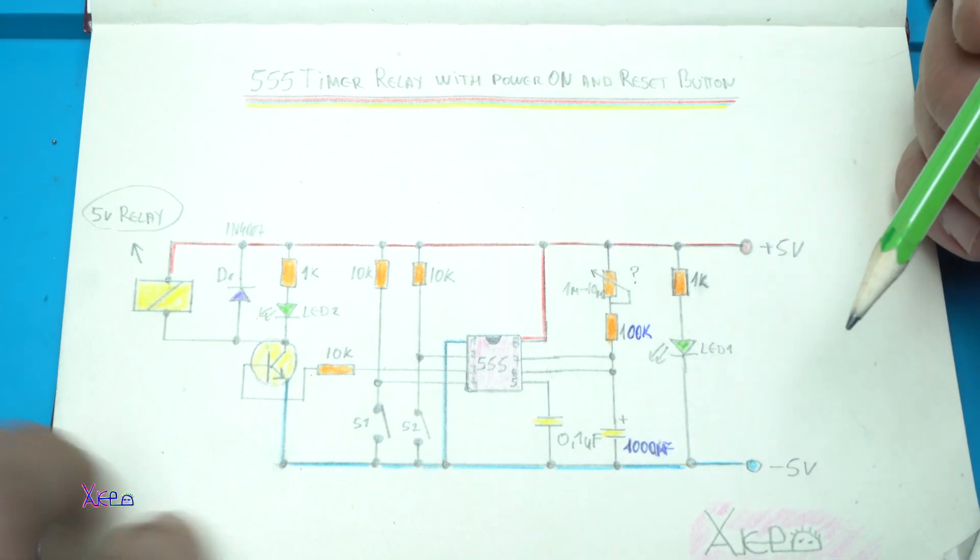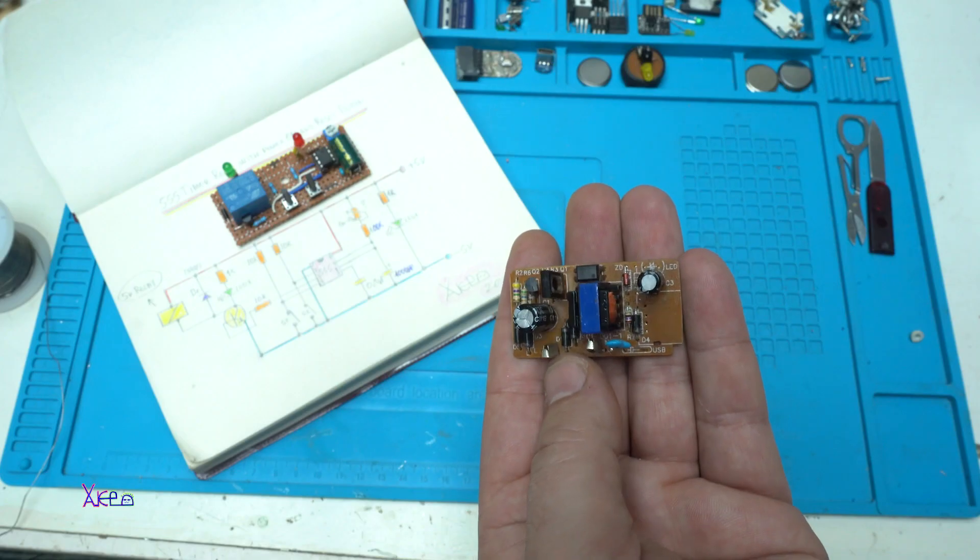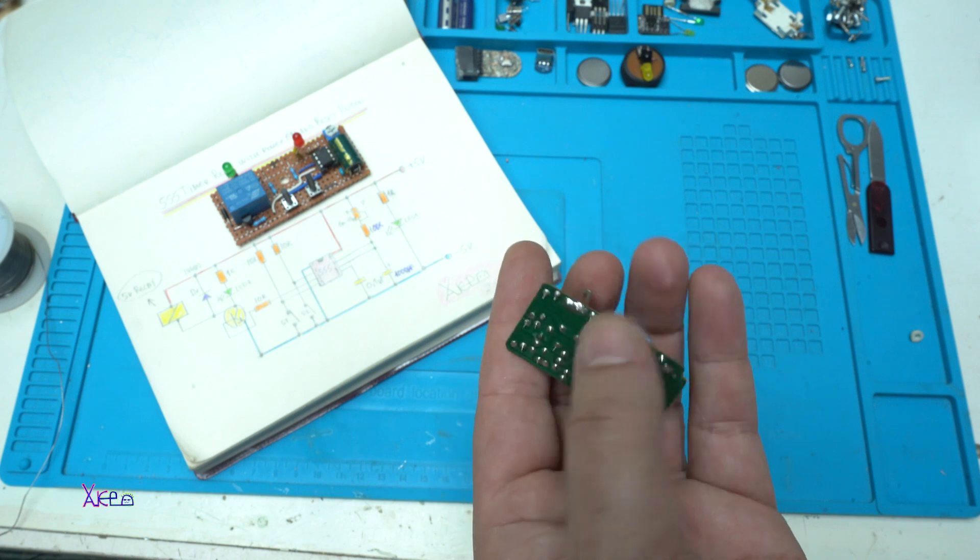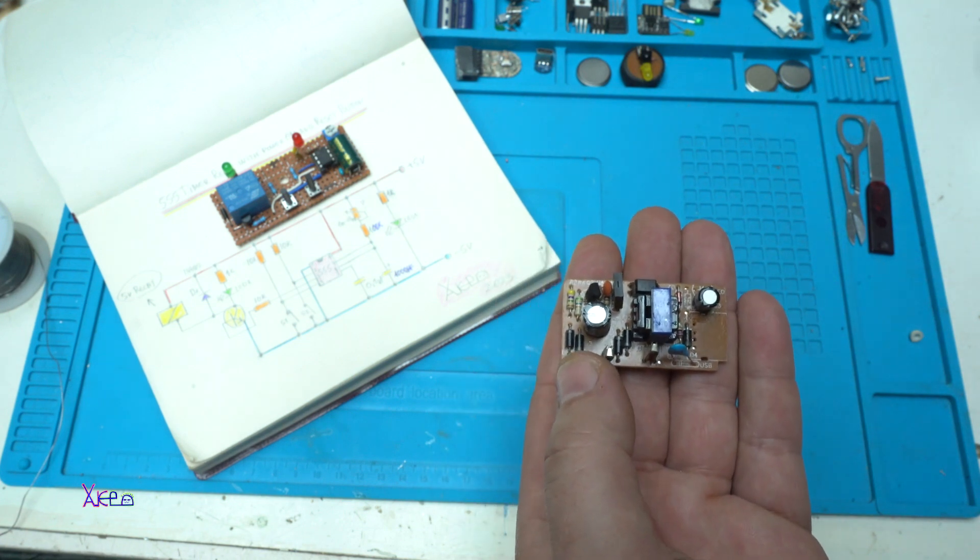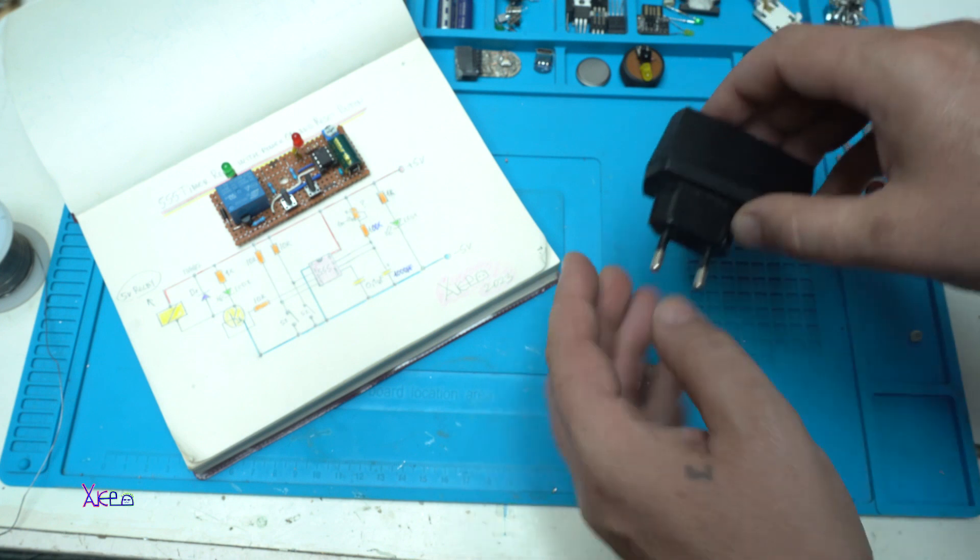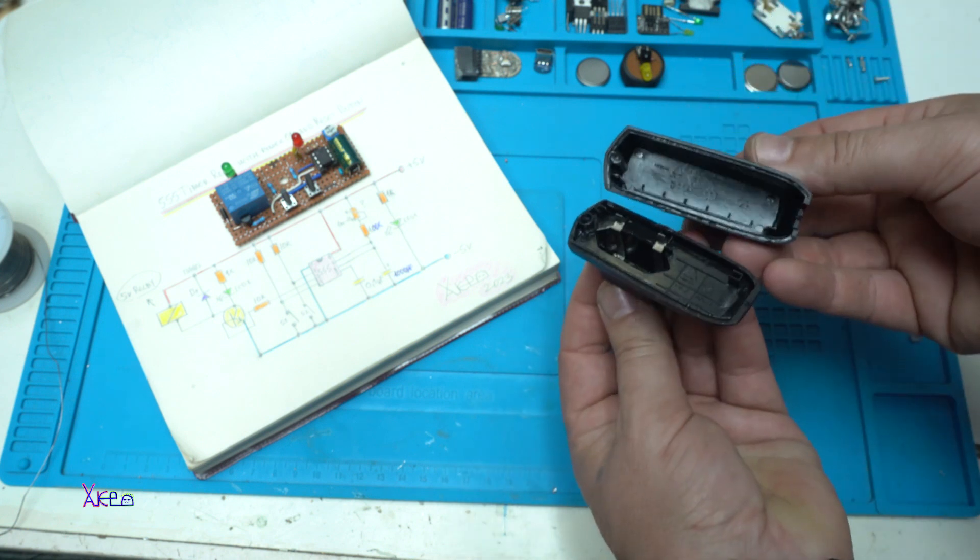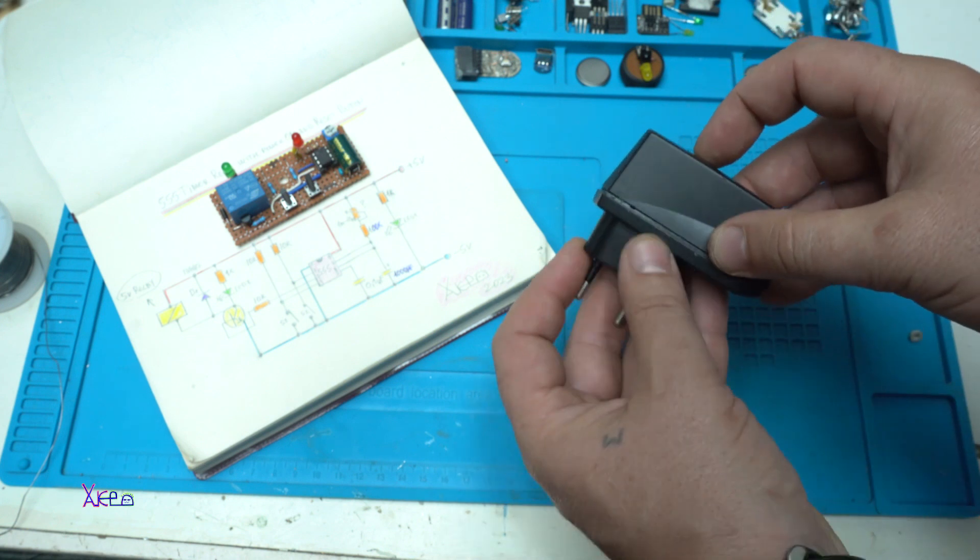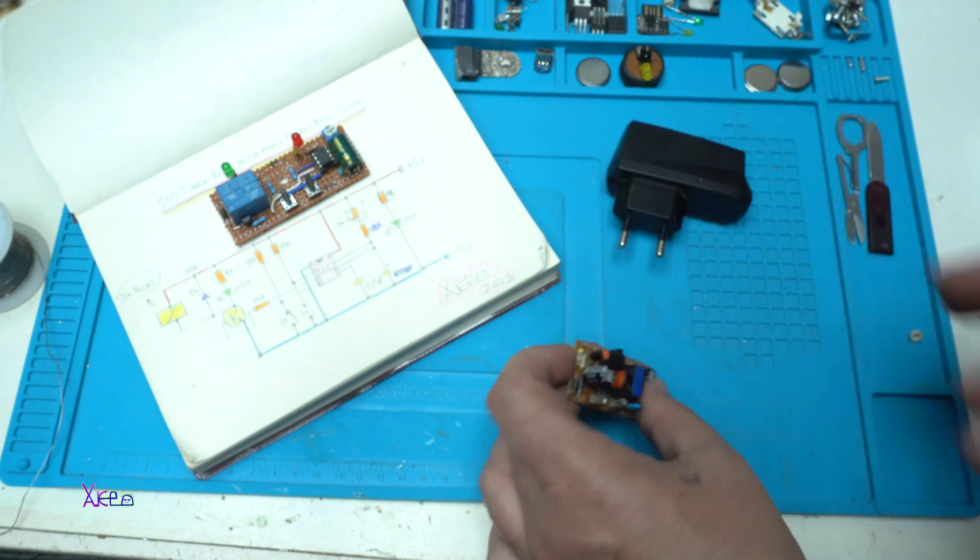Besides the electronic circuit that I built with 555 that is a timer relay, you will need a power supply. I use this power adapter and pulled out the electronics. And I'm going to use that for my box.